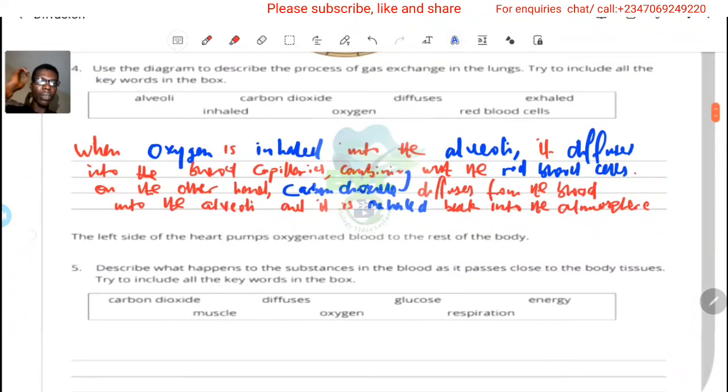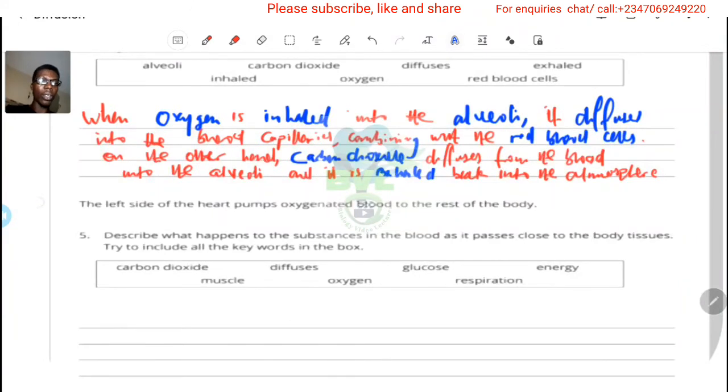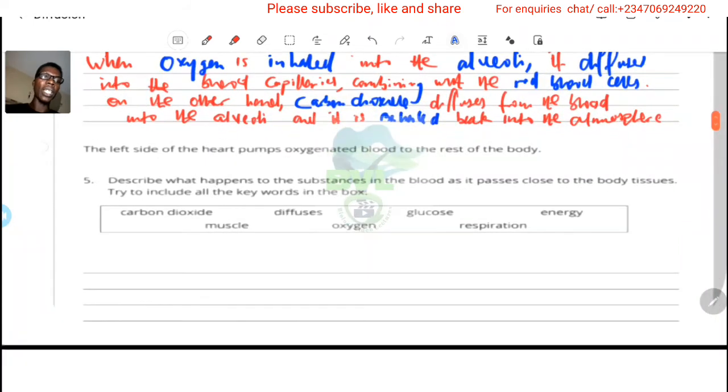Now it says the left side of the heart pumps blood to the rest of the body. Describe what happens to the substances in the blood as it passes close to the body tissue. Try to include all the keywords in the box.